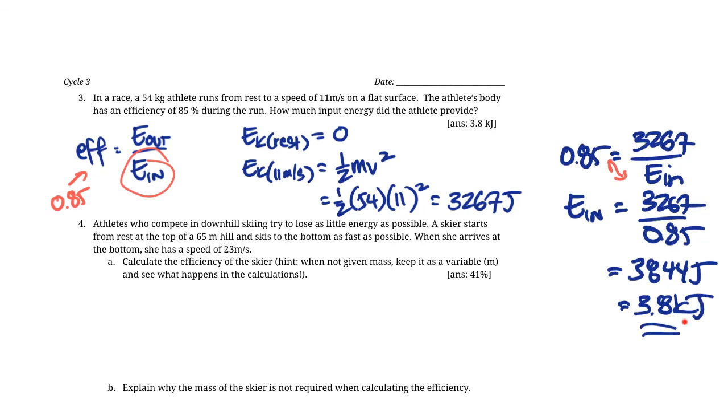The athlete actually burned more energy. 3267 of those joules went into actually increasing the speed. The other amount probably went into waste heat and regular body functions, like your brain and stomach.